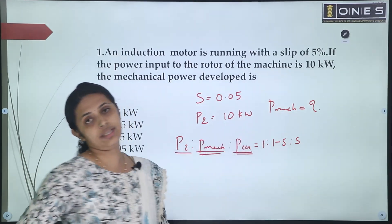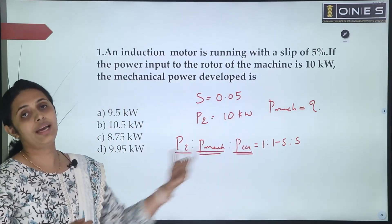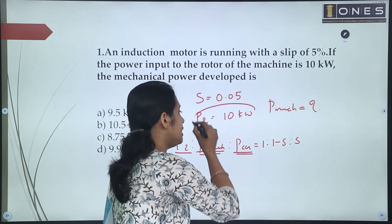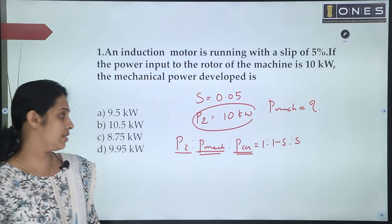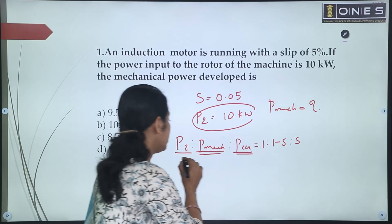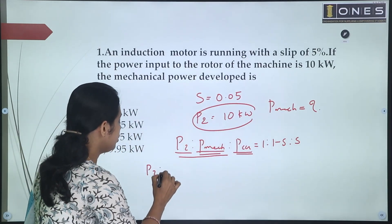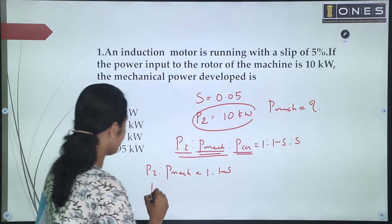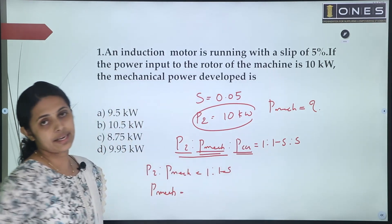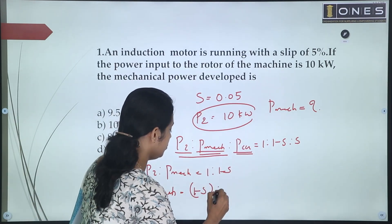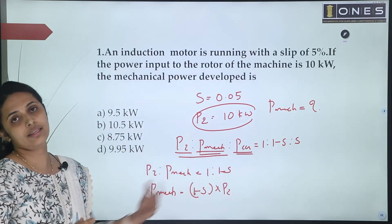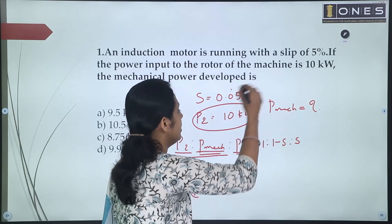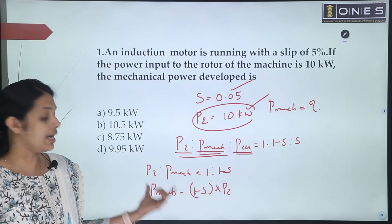Once we have a quantity, we calculate the others. P2 = 10kW. To find Pmec, we use the first two relationships: P2 : Pmec = 1 : (1 - S). So mechanical power developed = (1 - S) × P2 = (1 - 0.05) × 10kW = 0.95 × 10kW. That gives us the mechanical power developed.